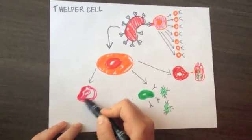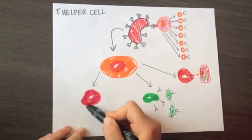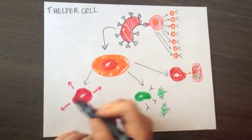Finally, signals from helper T cells stimulate suppressor T cells to slow down immune response once the virus is cleared.